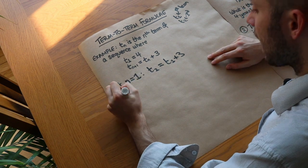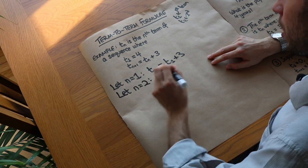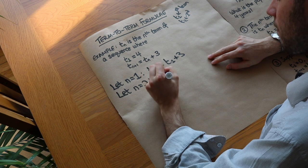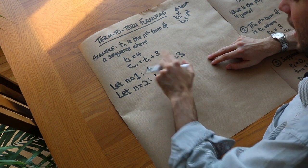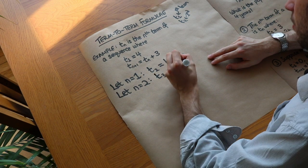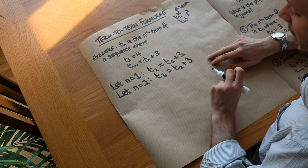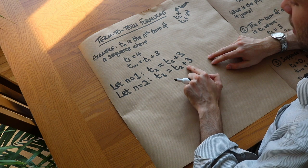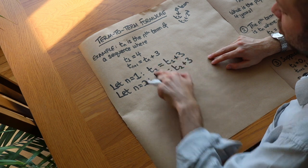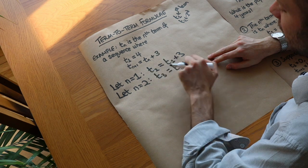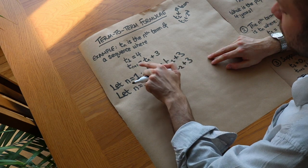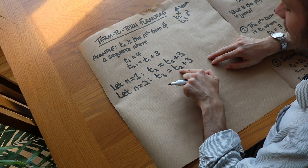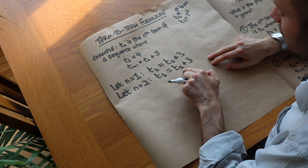What about if we let n equal to 2? We have T of 2 plus 1, which is T3, is equal to T2 plus 3. So that means the third term of the sequence is equal to the second term plus 3. In general, we can generate the next term of the sequence by doing the previous term plus 3. So the third term is the second term plus 3, the fourth term is the third term plus 3, etc.